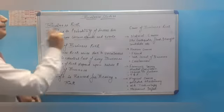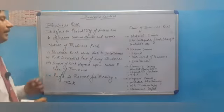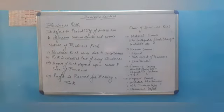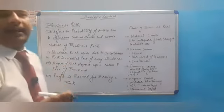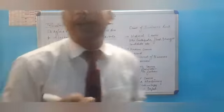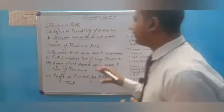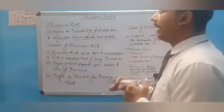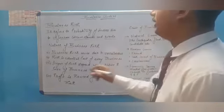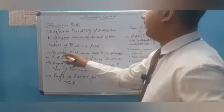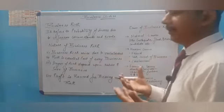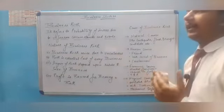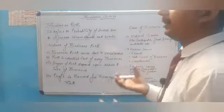That is known as business risk. What are the nature of business risk? There are four points. First: business risk arises due to uncertainty. It arises from uncertainty — maybe there is a change in technology or an earthquake.